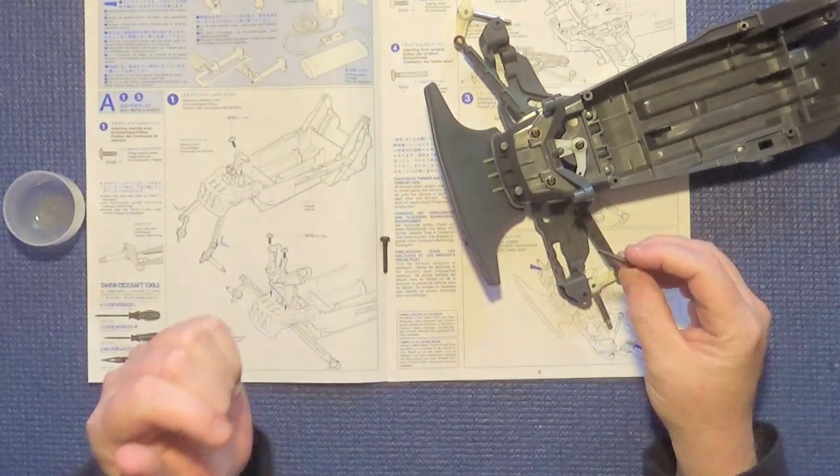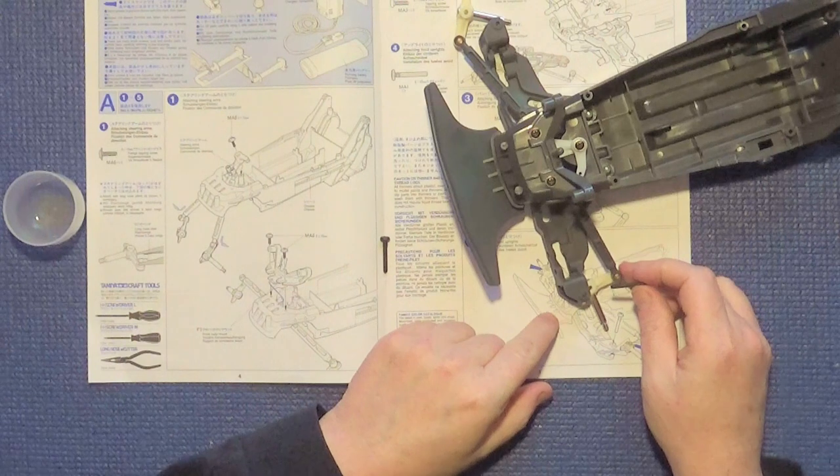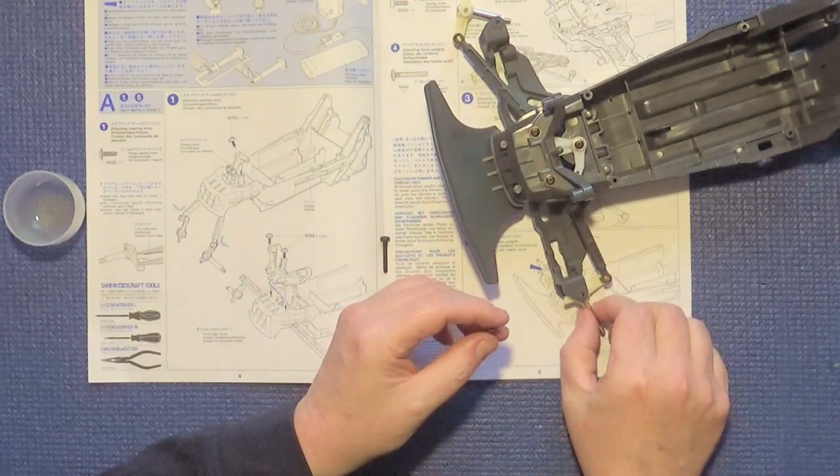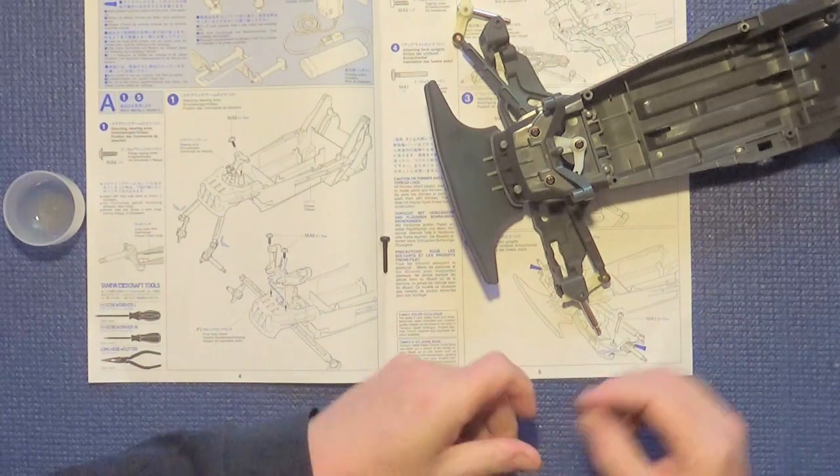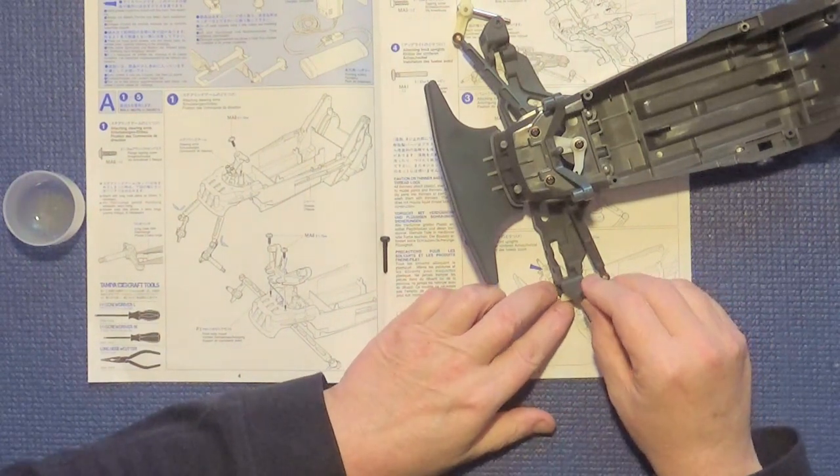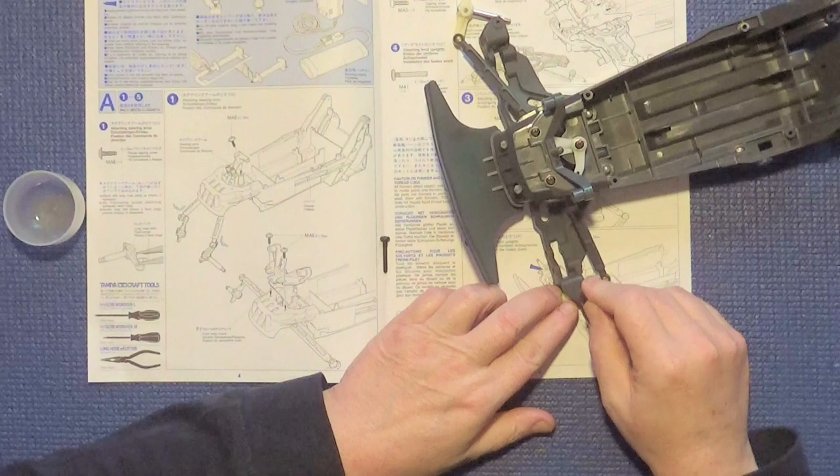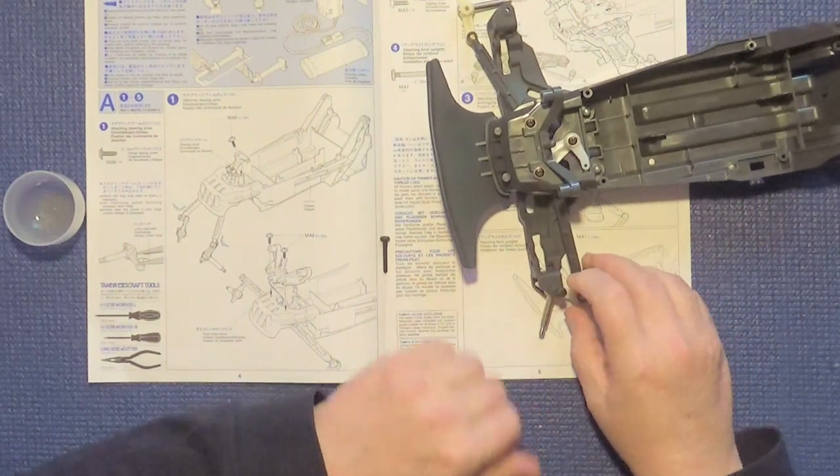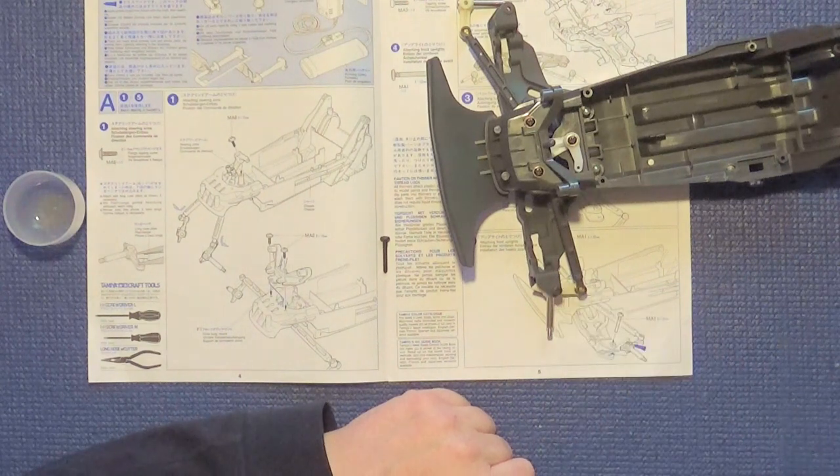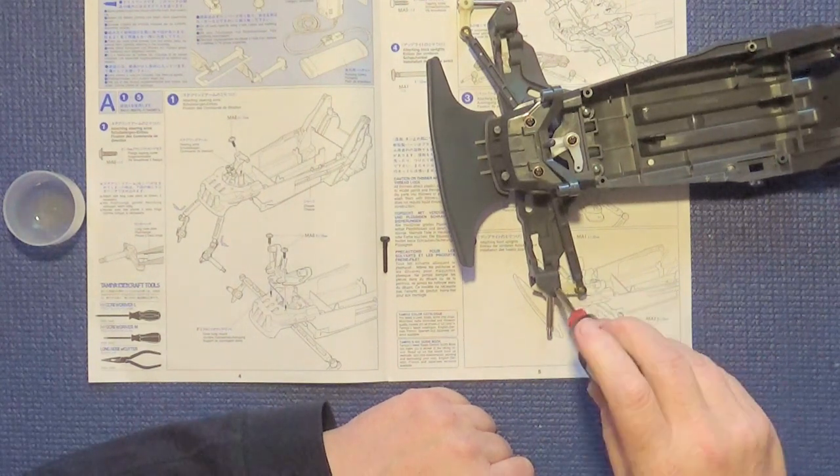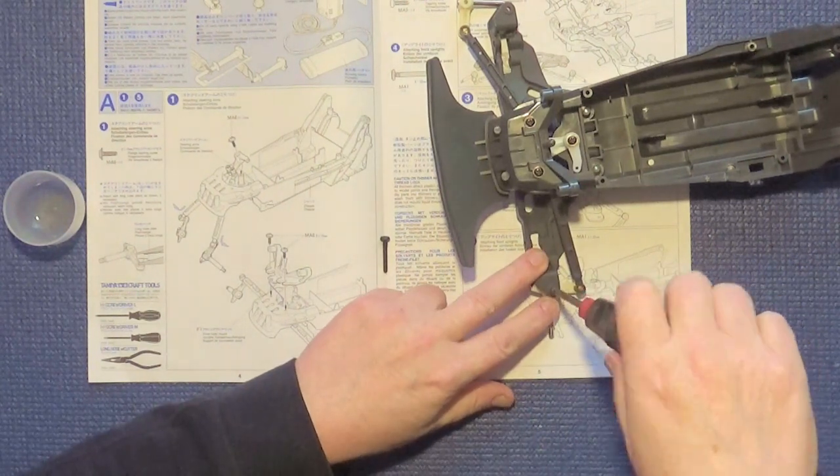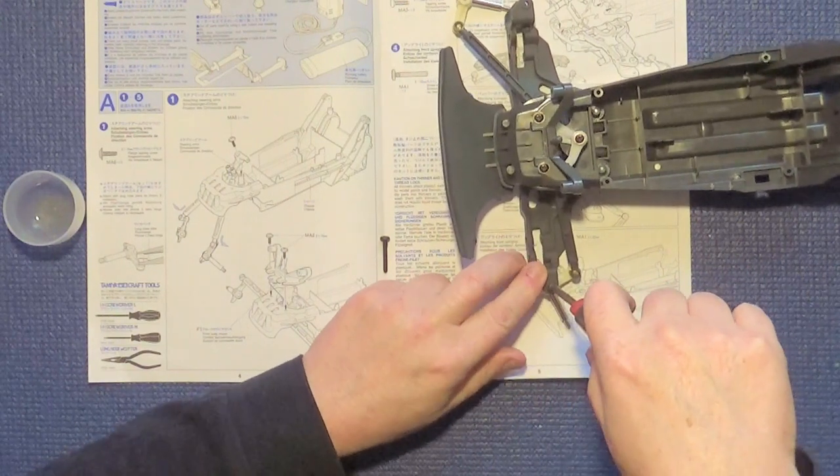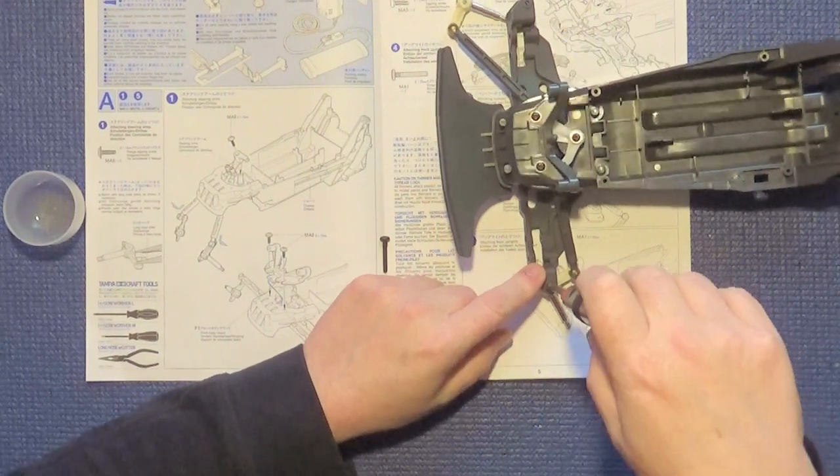Then using one of these, what is it, 22 millimeter screw pins, you line up everything as best you can and then we just screw it in. Again, for any newbies or inexperienced builders, this gray plastic here that forms the lower wishbone or A-arm is quite flexible and not as stiff as all this other plastic.